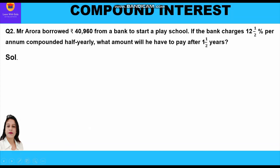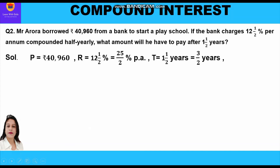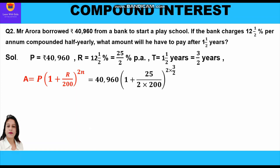Given: Principal P = ₹40,000,960; rate = 12½% = 25/2% per annum; time = 1½ years = 3/2 years. Applying the formula A = P(1 + r/200)^(2n), we substitute: A = 40,000,960 × (1 + (25/2)/200)^(2 × 3/2).